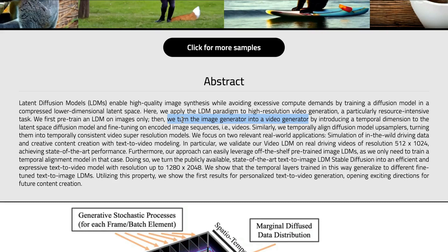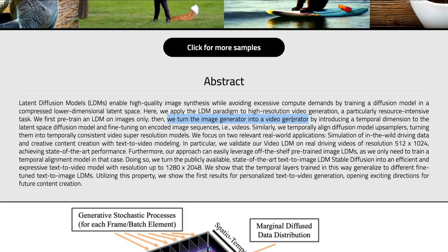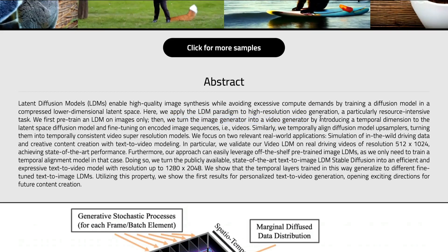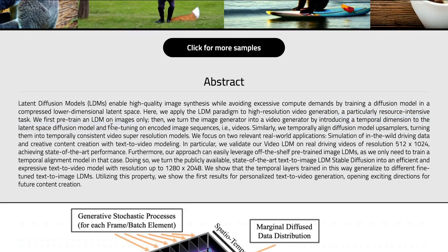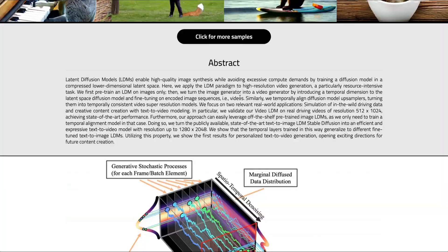The image generator you have today is turned into a video generator by introducing a temporal dimension to the latent space diffusion model and fine-tuning on encoded video frames.